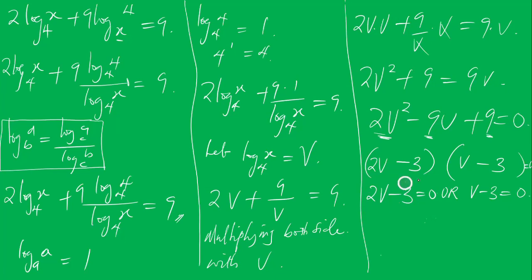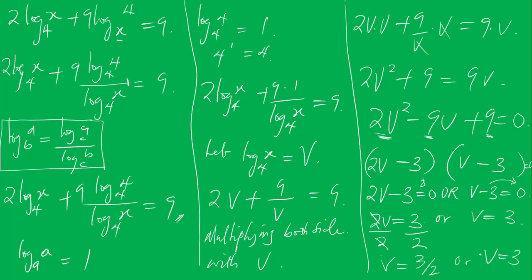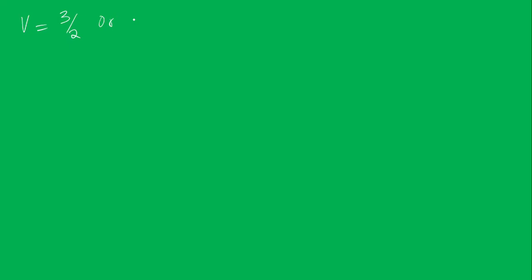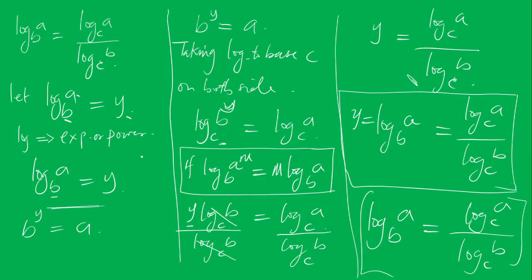Moving the constants across: 2V equals 3, so V equals 3 over 2; or V equals 3. Therefore, log X base 4 equals 3 over 2 or log X base 4 equals 3.